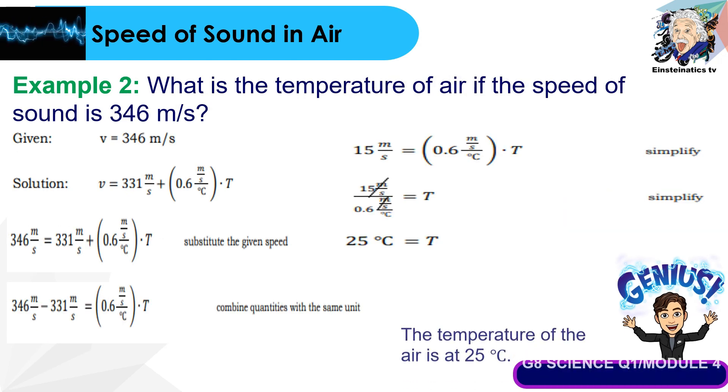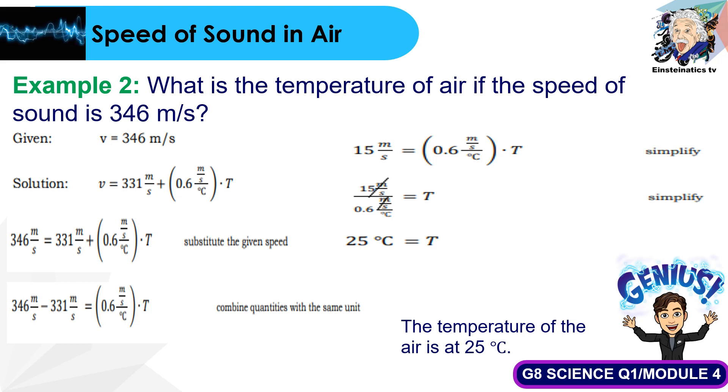How about if we are going to compute the temperature based on the given speed of sound? We use the same formula. Substitute the value for the speed, which is 346 meters per second. It equals 331 meters per second plus 0.6 meters per second over degree Celsius times temperature. Combine the quantities with the same unit. Subtract 346 minus 331. The result is 15 meters per second equals 0.6 meters per second over degree Celsius times temperature. Simplify it and divide 15 by 0.6. The result is 25 degrees Celsius.